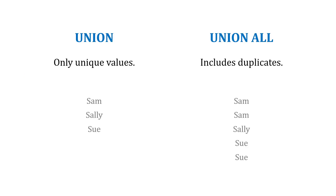So with UNION you're only getting unique values, and with UNION ALL that's going to include duplicates.